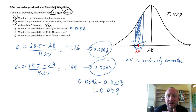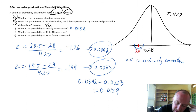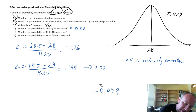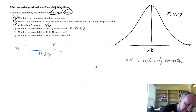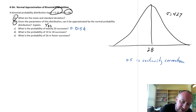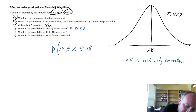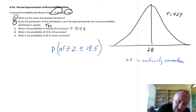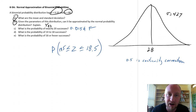Next: what is the probability of 14 to 18 successes? We want to include both endpoints — 14 and 18. So this is the probability that x is between 14 and 18 inclusive. Again, we apply the continuity correction factor of 0.5 to include both endpoints in the calculation.